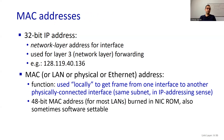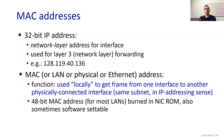MAC is the most preferred name, but people also refer to it as local area network address, physical address, or Ethernet address. MAC is known by everybody, so we are going to use the name MAC. Its function is to get a frame from one interface to another physically connected interface — the same subnet in the IP addressing sense. So in this case, instead of layer 3, we communicate at layer 2, and we need a way of addressing them.